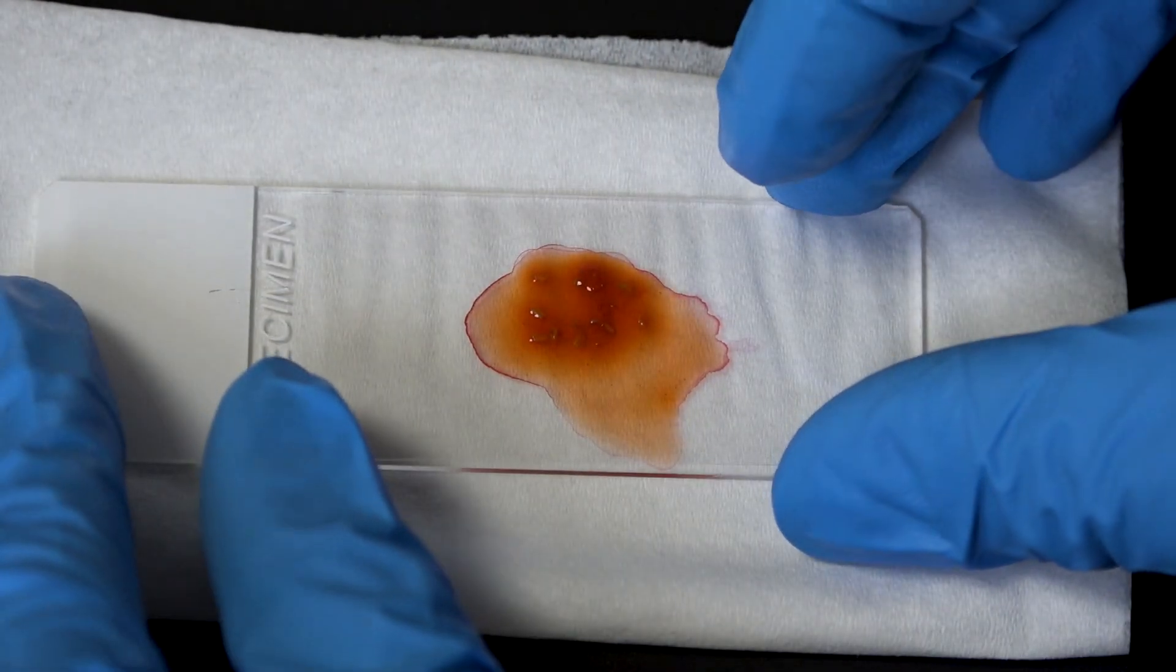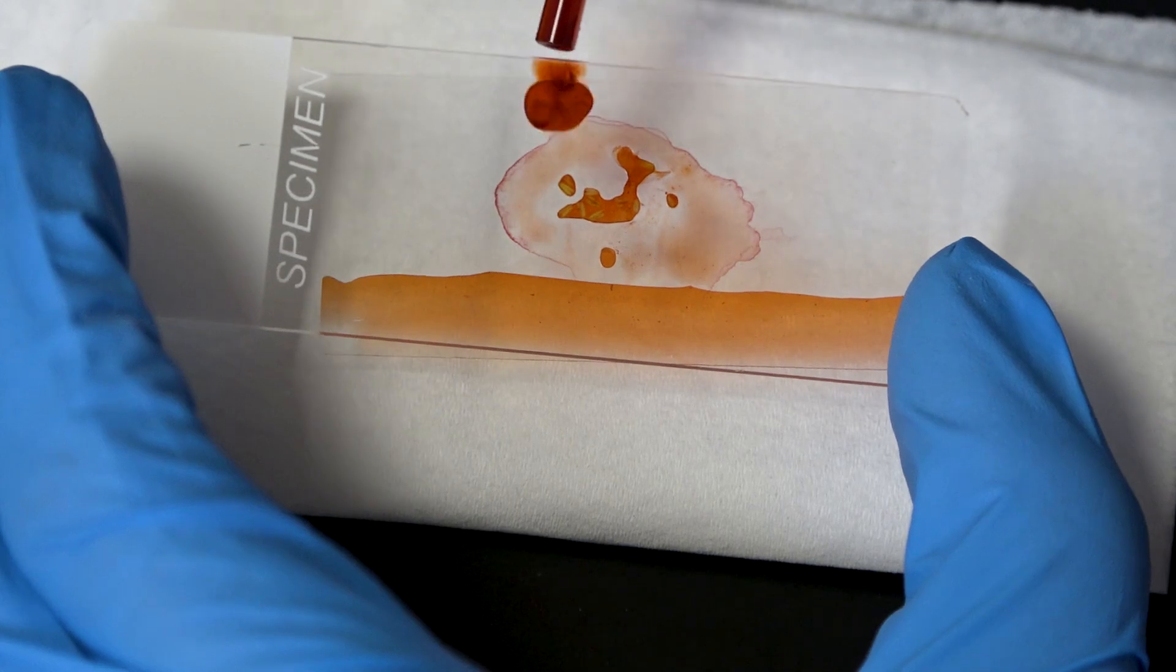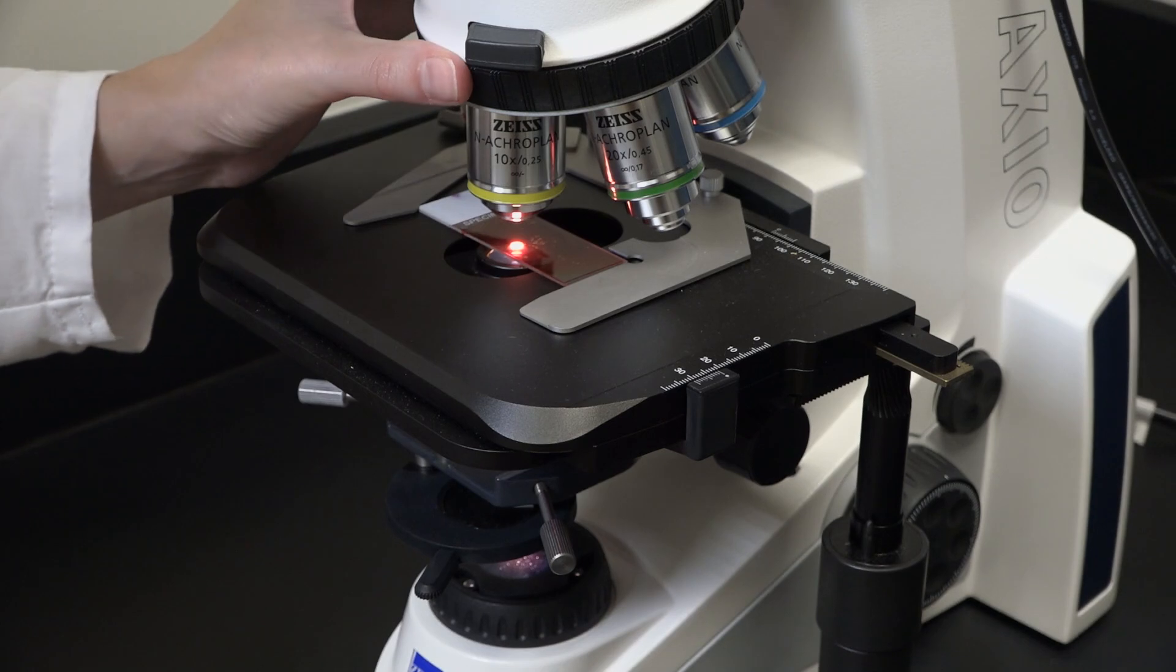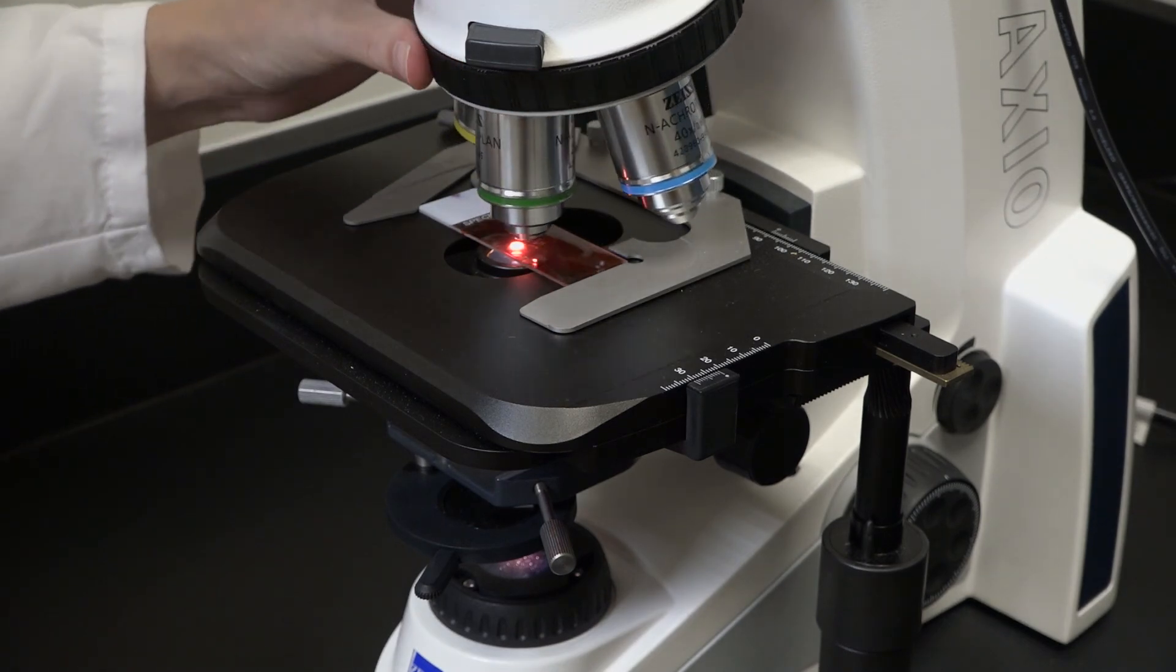Then all we have to do is place a cover slip on the slide, add a little more stain to fill in any air pockets, and pop it onto the light microscope. You'll need a pretty high magnification, something like 40x or above.